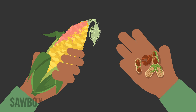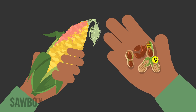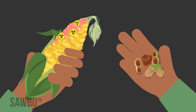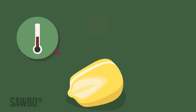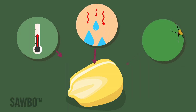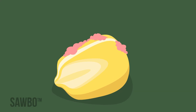Different molds produce different toxins. Some are called aflatoxins, others are called fumonisins. When temperature, moisture, and other conditions are right, molds can grow on crops or food and produce these toxins.